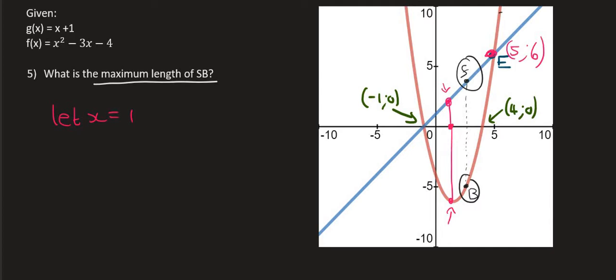You could then plug that x value into each of the equations to get the y values at each of those points. You could then minus those two y values to get that length. And you could keep doing that until you get the biggest length. But there's a much faster way.